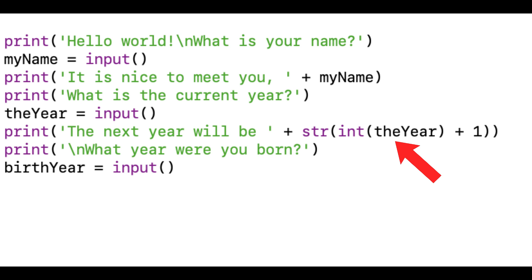On the line that says 'The next year will be', we actually converted data types. Breaking it down: int(the_year) converts the value stored in the variable 'the_year' — which was taken as user input — into an integer. It assumes the year was initially a string and converts it to an integer. Now that it's been converted, you can actually add 1 to it, and then we print that result out as a string.